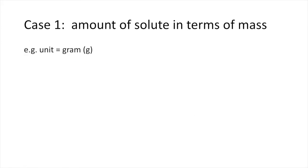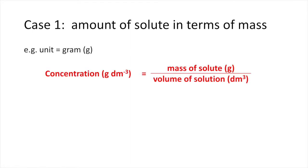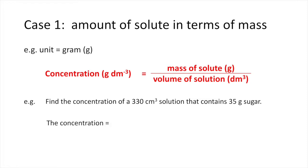In our calculation, there are two cases. The first one is, we find the concentration from the amount of solute in terms of mass. The unit of solute is in terms of grams. Concentration equals to mass of solute divided by the volume of solution in dm cubed.